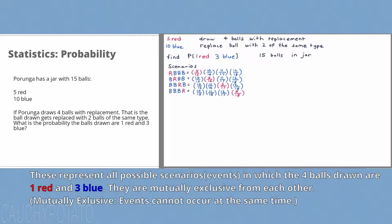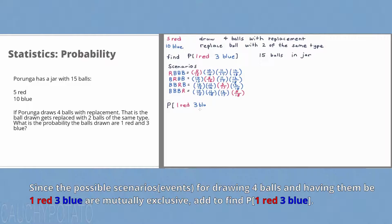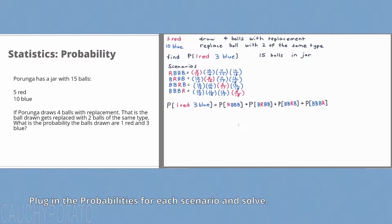These four individual events all end up with one red and three blue balls, and that is the probability we want. Since the events are mutually exclusive, we must add them. So P(1 red and 3 blue) equals P(RBBB) + P(BRBB) + P(BBRB) + P(BBBR). Now we just plug in the probabilities for the individual scenarios.